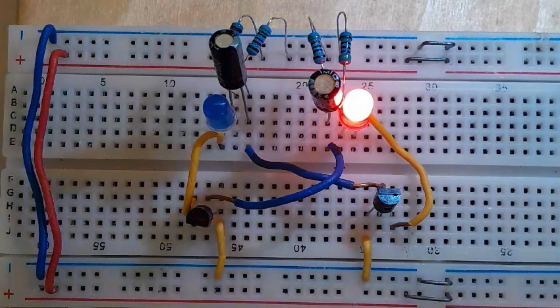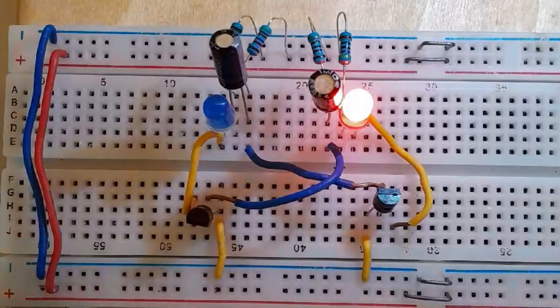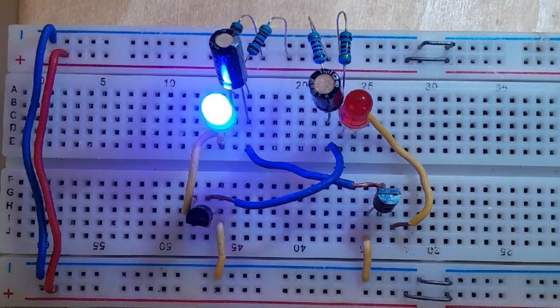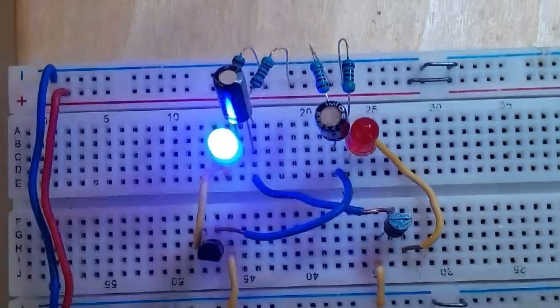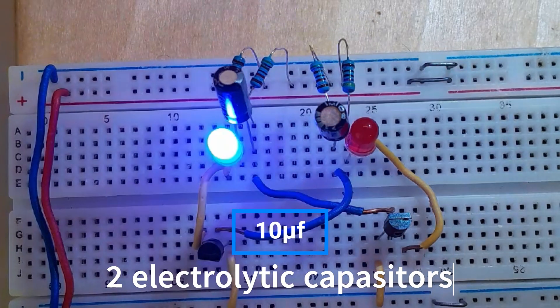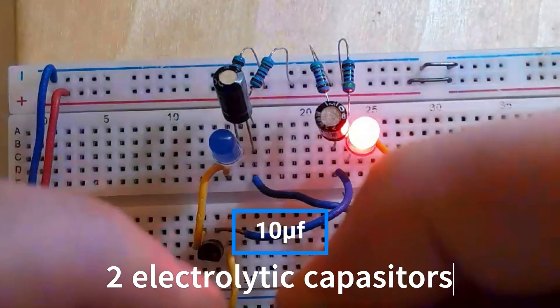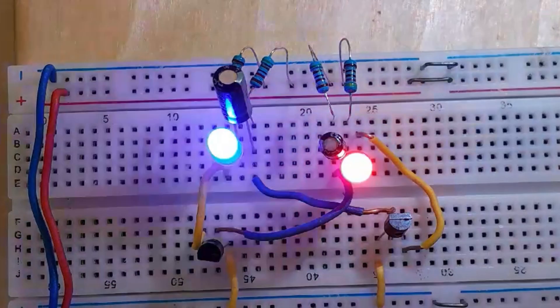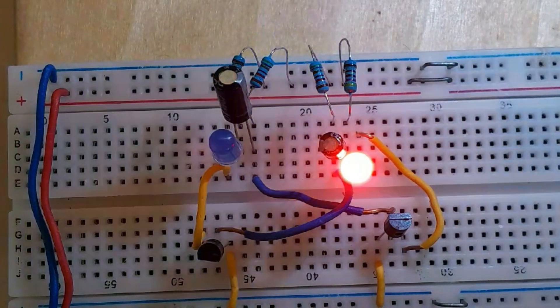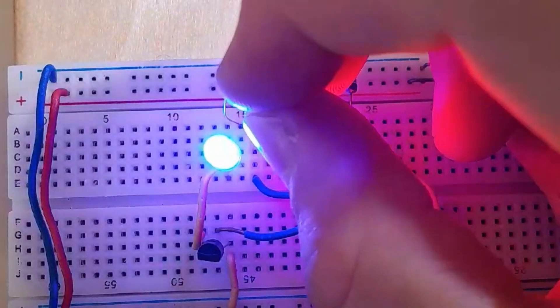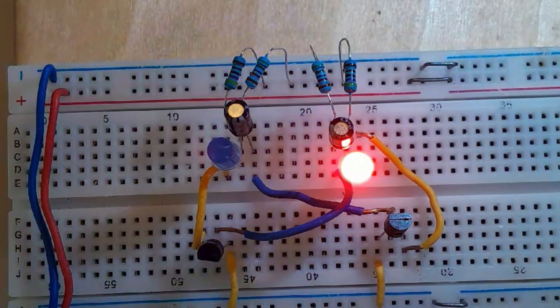Now you could change the value of the capacitors. I have different values, so I will use instead of 47 microfarad capacitor, I will use 10 microfarad capacitor, so it should blink faster. Replace the capacitors and you should see the blinking becomes faster. If you replace it on one side it will be faster on one side and slower on the other side. But if you have the same value on both sides, it will blink at the same time.